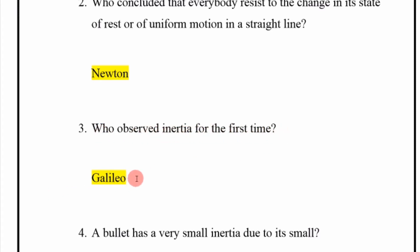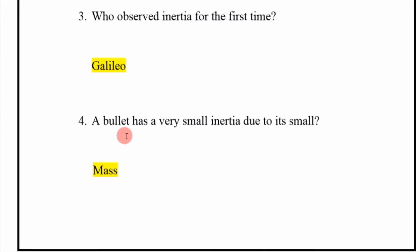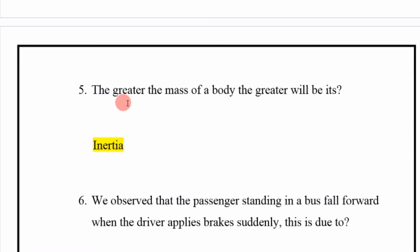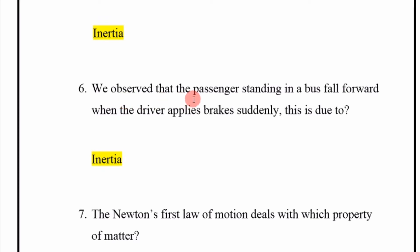A bullet has very small inertia due to its small mass. The greater the mass of a body, the greater will be its inertia. We observe that a passenger standing in a bus falls forward when the driver applies the brake suddenly. This is due to inertia.